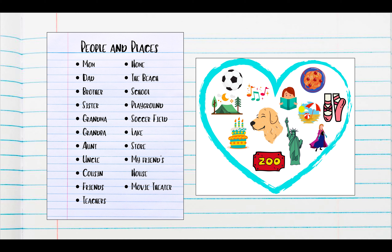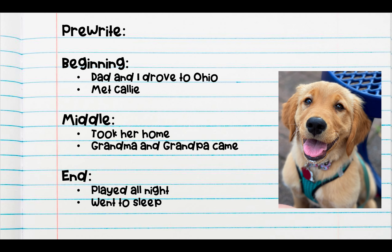Today, I'm going to focus on my dog. I got a puppy this year, and I would love to write a story to share it with all of my friends. And I'm going to remember that when I got my puppy, it wasn't just me. I had some other important people with me, like my family members and my friends, so I'm going to be sure to keep my people and places list out so that I can remember to include all of the characters in my story. This is a picture of my puppy. She's pretty cute, I think, and her name is Callie.